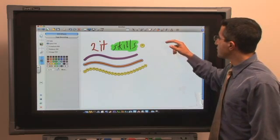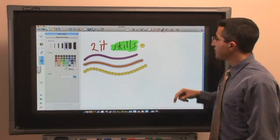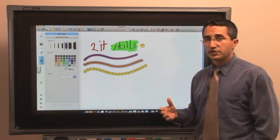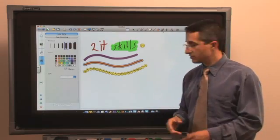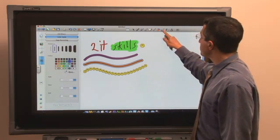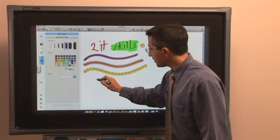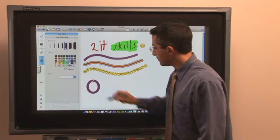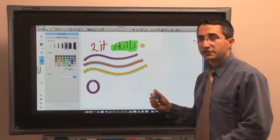Another thing I can use is the shape tool. Now the shape tool allows me to draw a shape and make it look perfect. So I'll give you an example. I'm going to pick up the pen and choose the shape tool and I'm going to draw a circle. And it turns into a perfect circle.